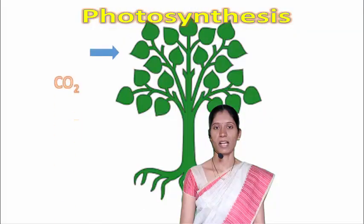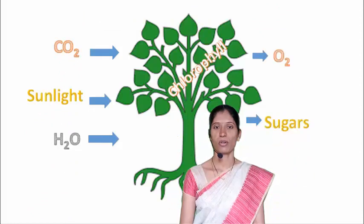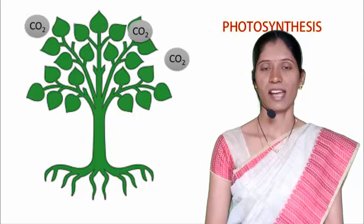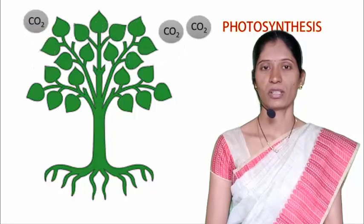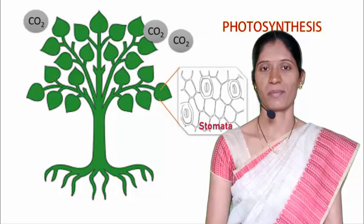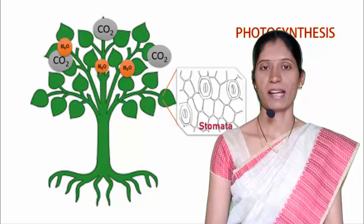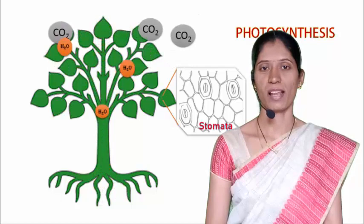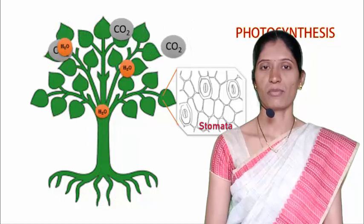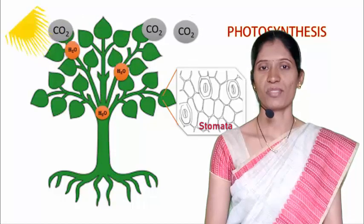Let's see how plants synthesize their own food and for this we need to understand photosynthesis. Plants need carbon dioxide, sunlight, water and chlorophyll molecules for the synthesis of sugars. Plants take atmospheric carbon dioxide through tiny pores in leaves called stomata. Plants also obtain water from the soil. This carbon dioxide and water needs to be converted into sugars, and for this conversion plants require energy, which they obtain from sunlight.